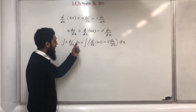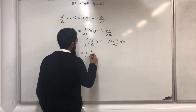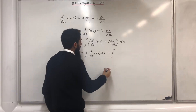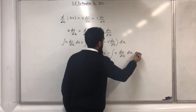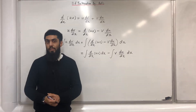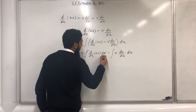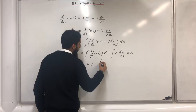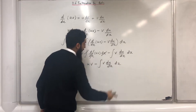Now I can split this integral into two parts, giving me the integral of d/dx of uv dx, minus the integral of v du/dx dx. I know that differentiation and integration are inverses of each other, so using this concept I can cancel the integral and d/dx to give me uv minus the integral of v du/dx dx.